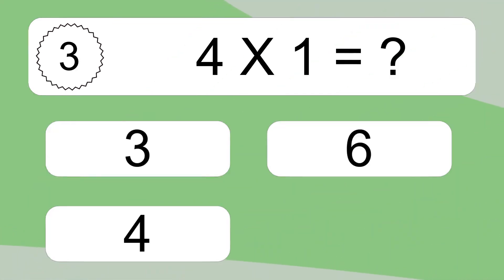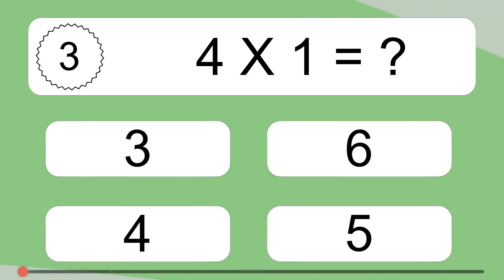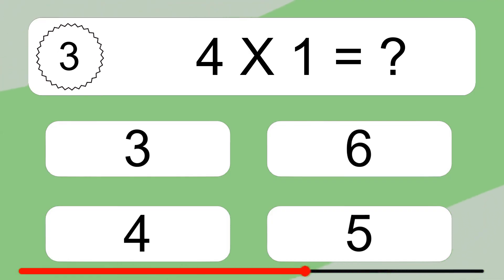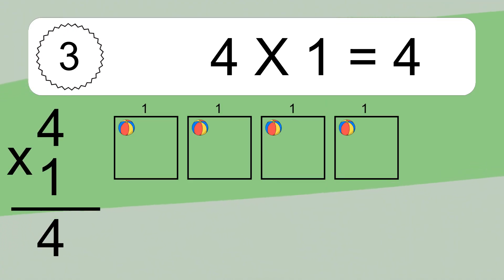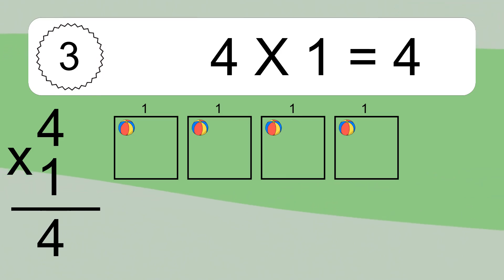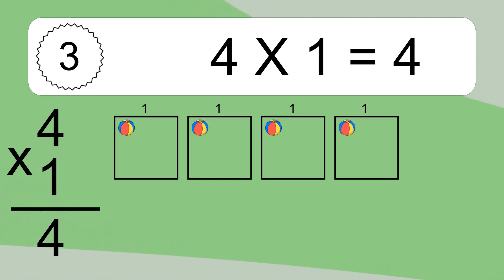4 times 1 equals what? We have 4 boxes, and each box has 1 colorful ball inside. If you count all the balls in all the boxes together, you will have 4 times 1 balls. This equals 4 balls.